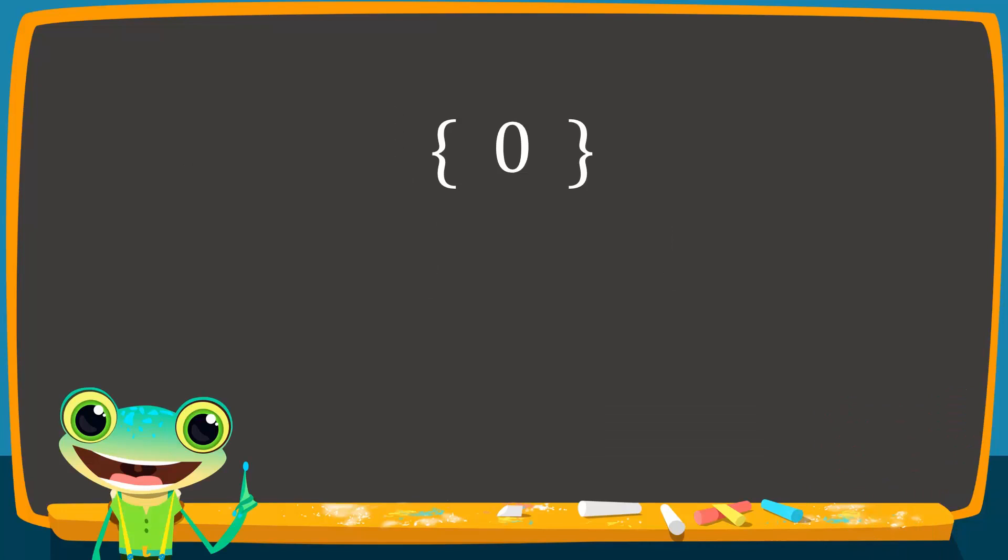Now, look at this set. Is this an empty set or a singleton set? Observe that 0 is an element of the set. It does not mean that there are 0 elements in the set. Therefore, this is a singleton set.